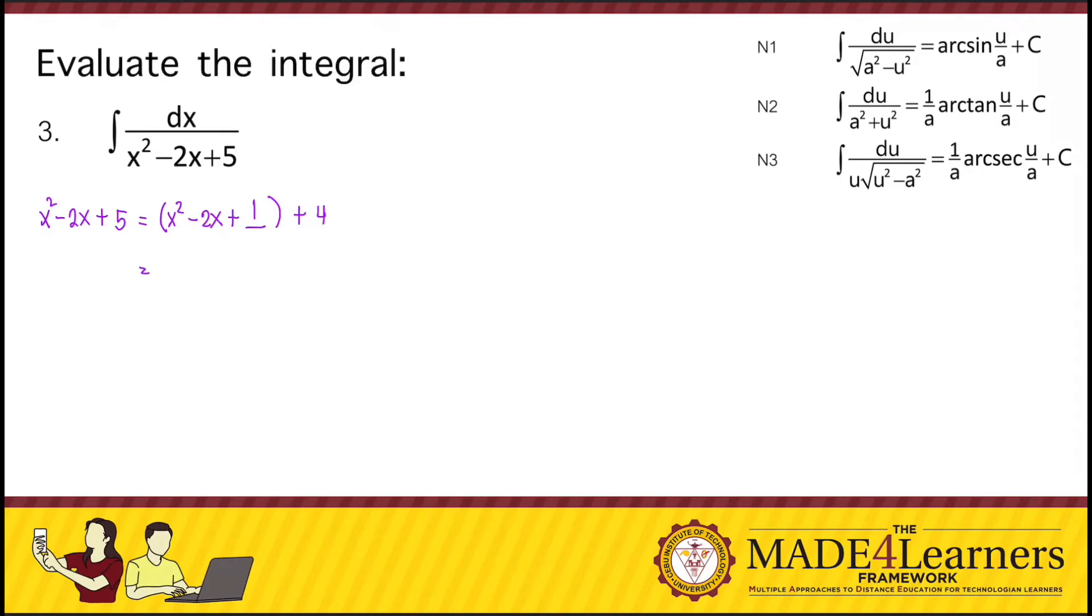So we factor out, this is already a perfect square trinomial. We factor this out to express as a binomial raised to the power of 2. So x squared minus 2x plus 1 is equal to x minus 1 quantity squared, and 4 is equal to 2 squared.